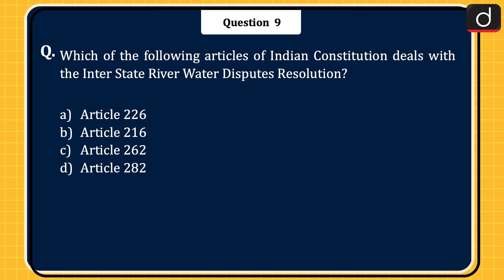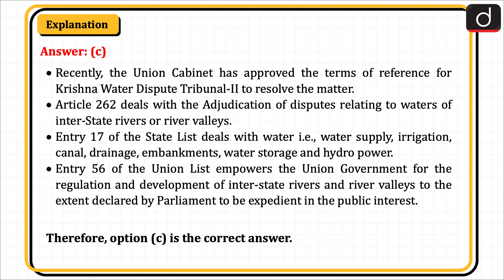The next question: which of the following articles of the Indian Constitution deals with interstate river water disputes resolution? Article 226, Article 216, Article 262, or Article 282? The correct answer is option C, Article 262. Recently, the Union Cabinet approved the terms of reference for the Krishna Water Disputes Tribunal-II to resolve the matter. Article 262 deals with the adjudication of disputes relating to waters of interstate rivers or river valleys. Entry 17 of the State List deals with water — including water supply, irrigation canals, drainage, embankments, water storage and hydropower. Entry 56 of the Union List empowers the Union government to regulate and develop interstate rivers and river valleys in the public interest. Therefore, option C is the correct answer.